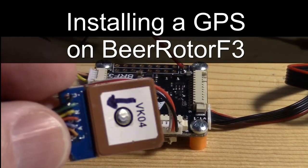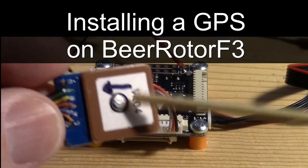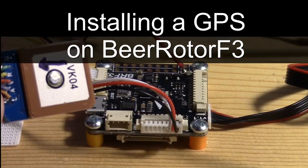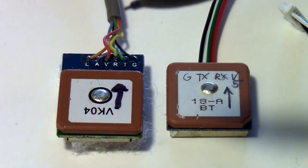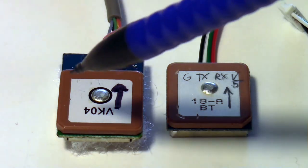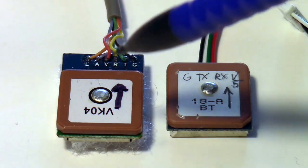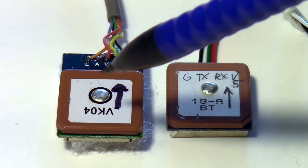This video is about adding a GPS magnetometer unit to my B-Rotor F3 flight controller. I have two mini GPS's here. This is a Series 7 U-Blocks from Banggood and it's the TN version.